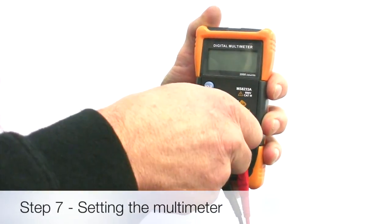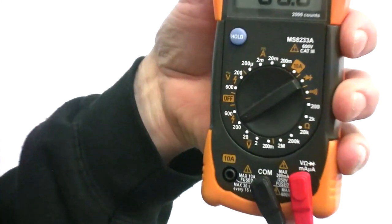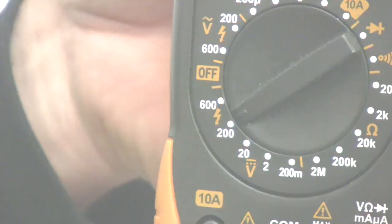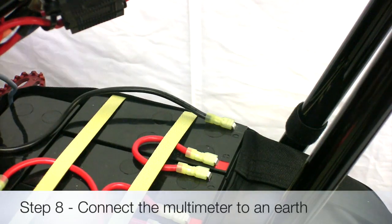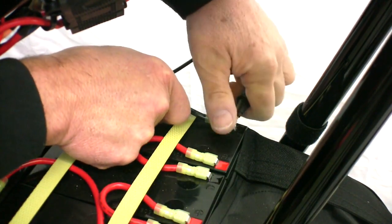Next, set your multimeter to measure DC voltage on a setting of at least 100 volts. Connect the negative multimeter probe to the negative battery terminal, which is connected to a black battery wire.